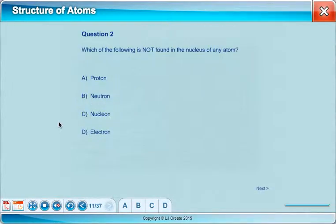We have another question. Which of the following is not found in the nucleus of any atom? So we're looking for something that is never in the nucleus. Proton, neutron, nucleon, electron. Pause for a second. All right. The answer is D, electron. Remember, protons and neutrons collectively are known as the nucleons. Why are they called nucleons? Because they're found in the nucleus vocabulary.